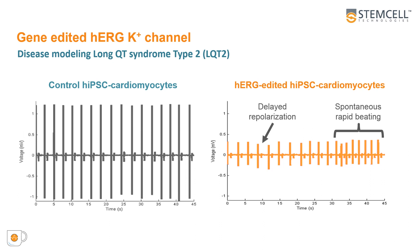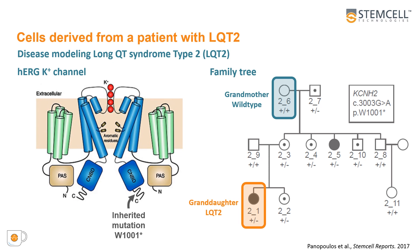We can observe that the control HPSC-derived cardiomyocytes show a stable and consistent field potential signal. However, for the HERG-edited HPSC-derived cardiomyocytes, we observe the delay in repolarization, a variability in beat period, but also the onset of spontaneous rapid beating, which resembles Torsades de Pointes.